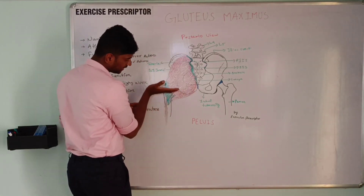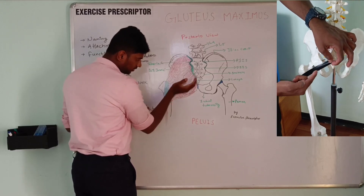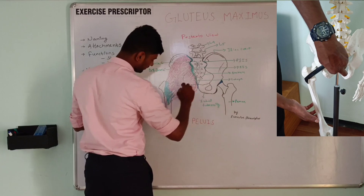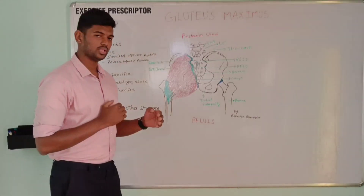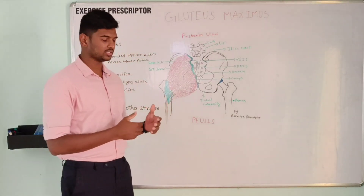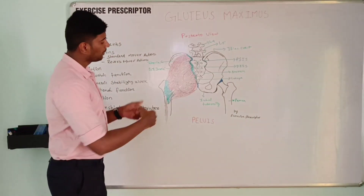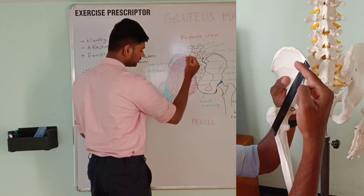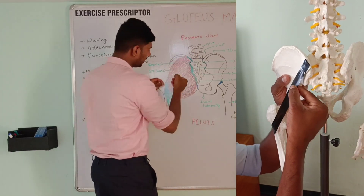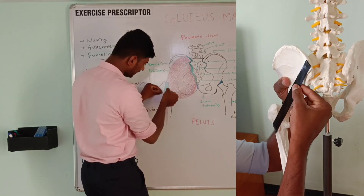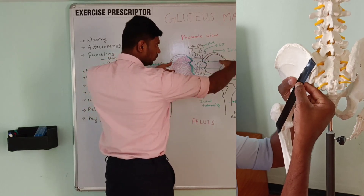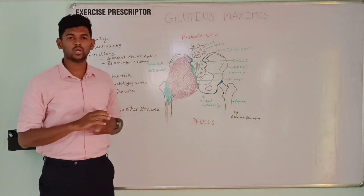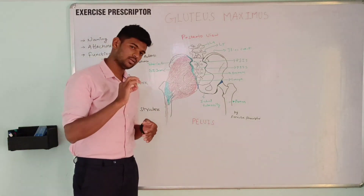The distal two-thirds muscle fibers are running horizontally in this direction, so if you pull these muscle fibers, it helps to adduct the thigh. Then we move into reverse mover action. The primary reverse mover action is posterior pelvic tilt. These muscle fibers are running from origin to insertion direction; if you pull these muscle fibers this way, it helps to posteriorly tilt the pelvis.